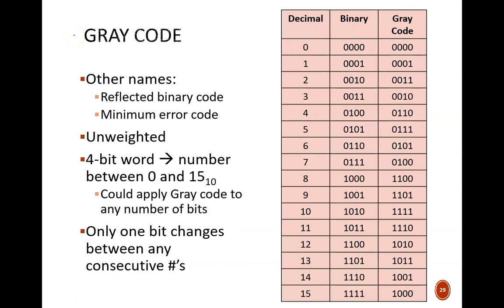Another unweighted binary code is gray code, named after Frank Gray of Bell Labs. Other names for gray code are reflected binary or minimum error code. This table shows how we would write the decimal numbers from 0 through 15 in both unsigned binary and in gray code. To count up to 15, 4 bits are needed.